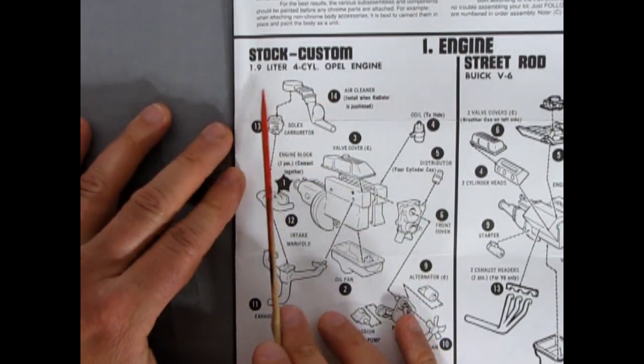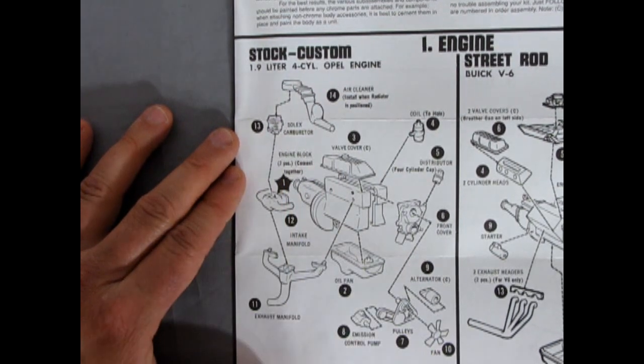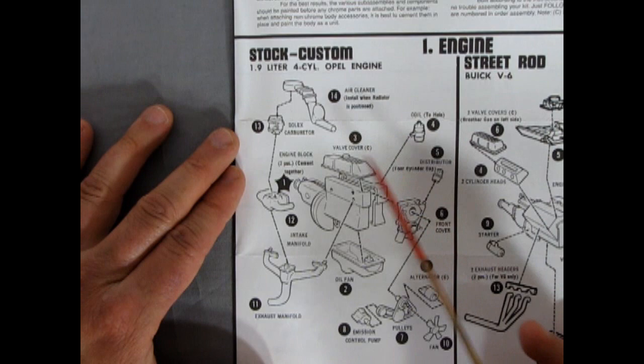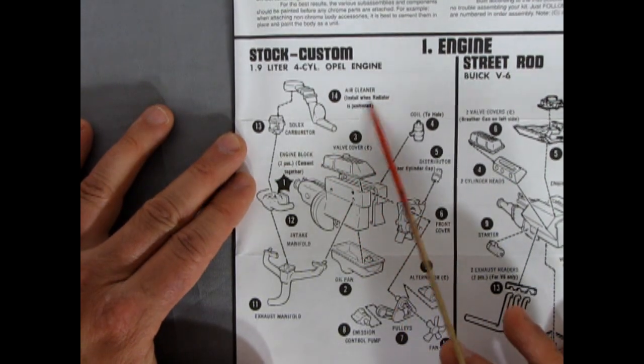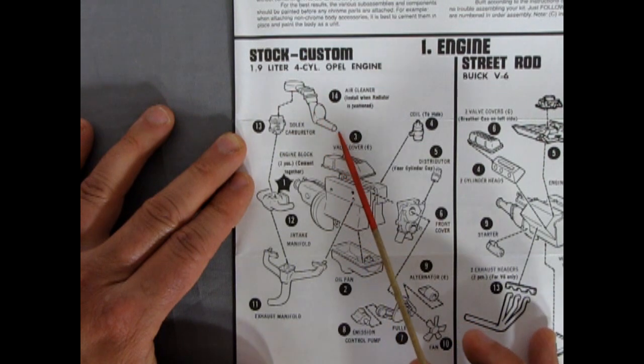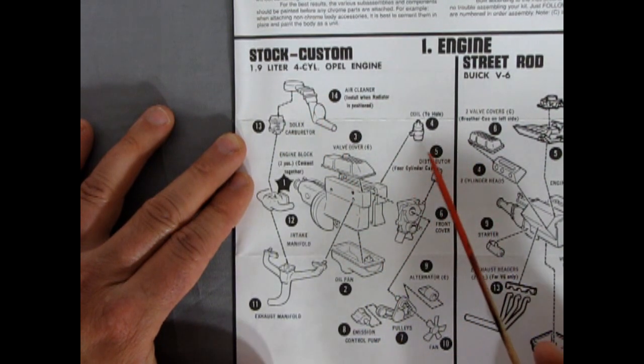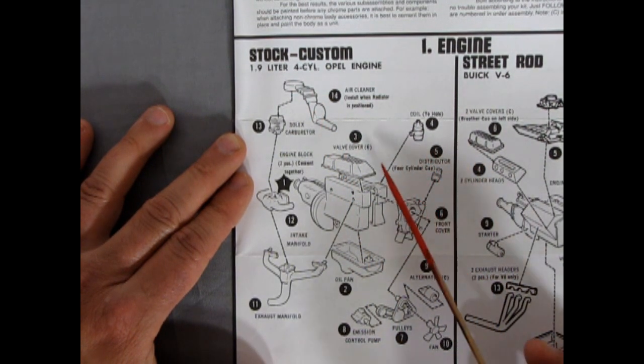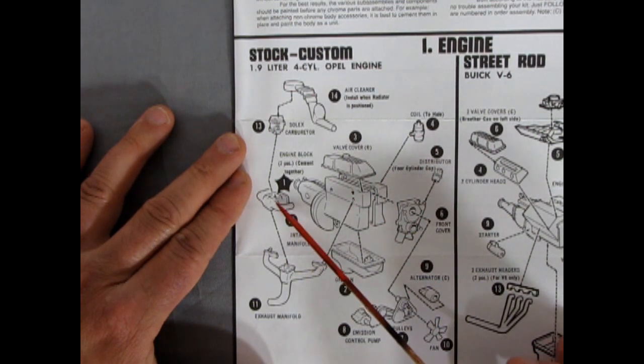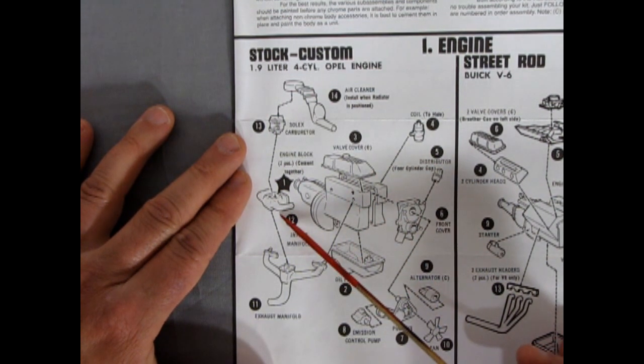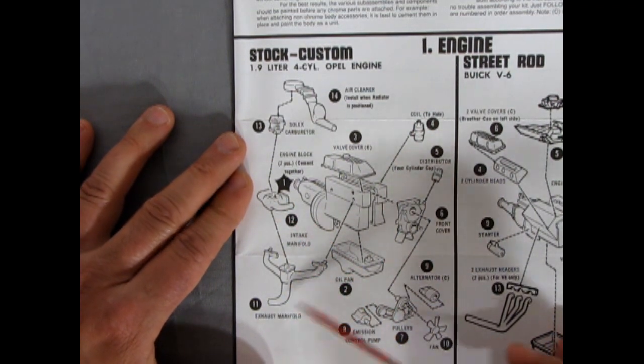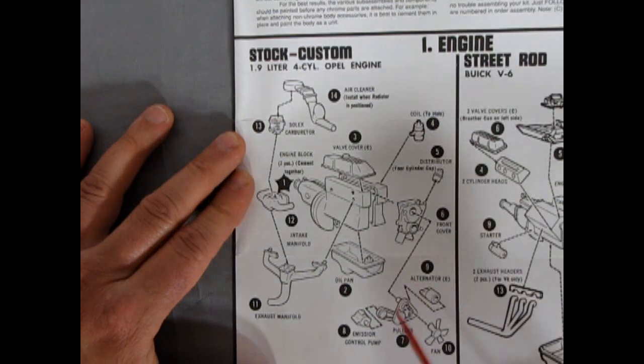So to start off with we have the stock custom 1.9 liter four cylinder Opel engine. And as you can see it's got a Solex carburetor. This really bizarre air cleaner. So the cleaner would be there. And then this comes down and goes somewhere in the front. We've got a coil here for our engine. Valve cover. The two halves of the engine block going together. The Solex carburetor of course is going to sit on this intake manifold. And the intake manifold sits on top of the exhaust manifold.